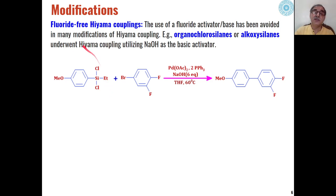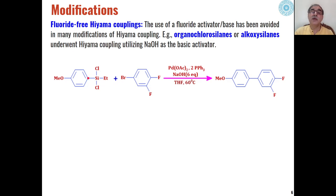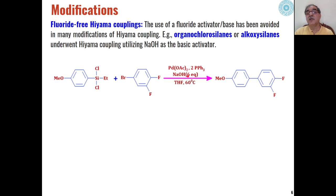Activation through a fluoride source is common, but conditions have been developed for fluoride-free Hiyama couplings as well. The use of sodium hydroxide as an activator has also been reported. When organochlorosilanes react with aryl halides in the presence of palladium acetate and sodium hydroxide, they undergo Hiyama coupling to give cross-coupling products. The basic advantage here is that we do not need to use a fluoride source; instead, we can use very mild sodium hydroxide as the activator.